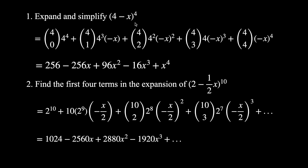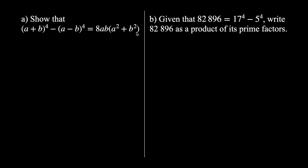That's really all there is to applying the binomial theorem to binomials. Once you've done a few you've done them all — practice problems are in the description. Now let's look at prime factorization. The first part says: show that (a + b)^4 − (a − b)^4 = 8ab(a² + b²).